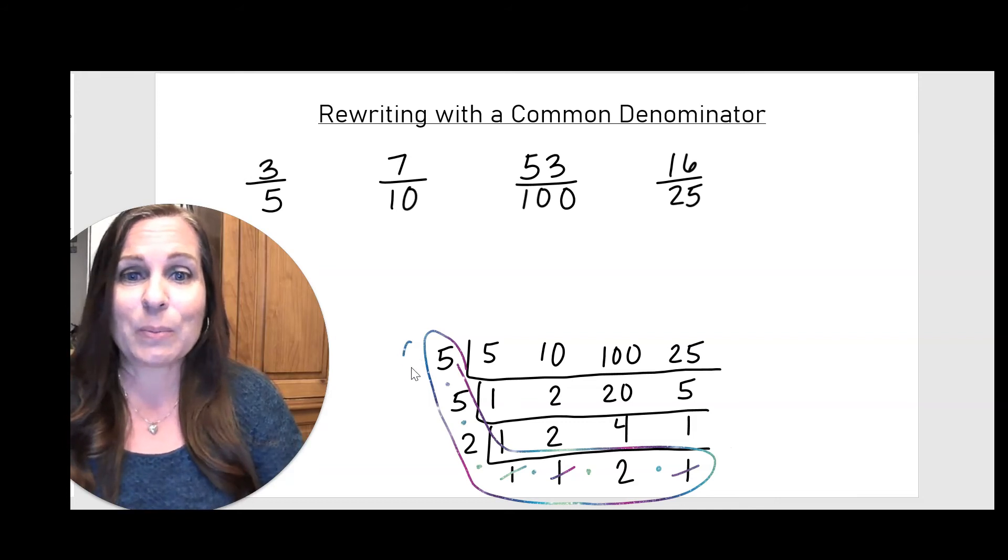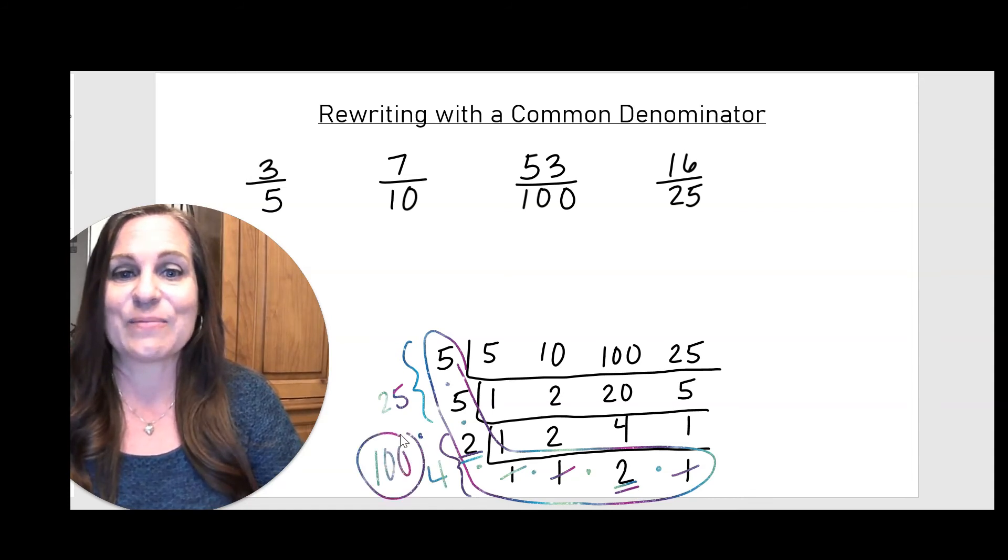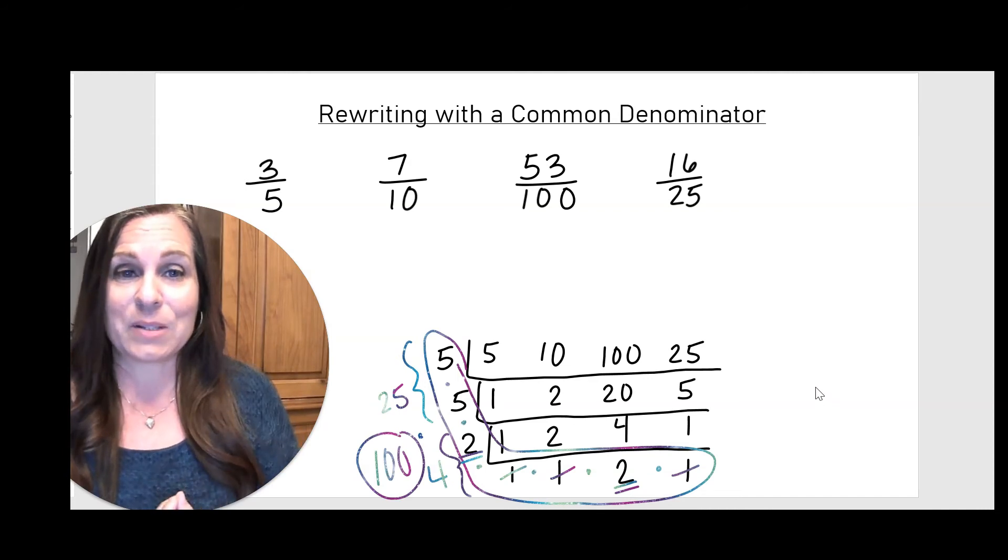So I'm going to multiply 5 and 5 to get 25. And then I can multiply this 2 and this 2 to get 4. And 25 times 4 is 100. So I found my common denominator.